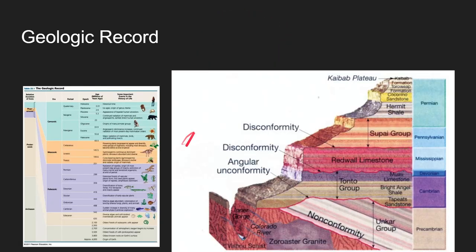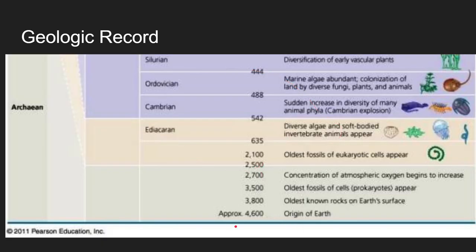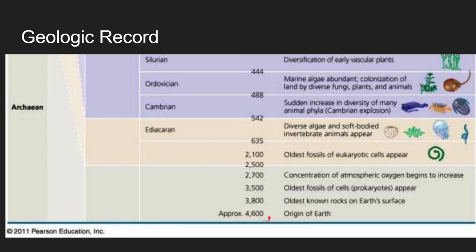Starting from the bottom of the picture and moving upwards: approximately 4.6 billion years ago, we see the origin of Earth — a large amount of space dust colliding to form a planet revolving around the sun. It isn't for about a billion years that we see the oldest known rocks on Earth. The general consensus is 3.8 billion years ago for the oldest rocks. Due to knowing how long it takes for rocks to form, we extrapolated the origin of Earth, though we don't have physical evidence beyond math. So it might even be older.